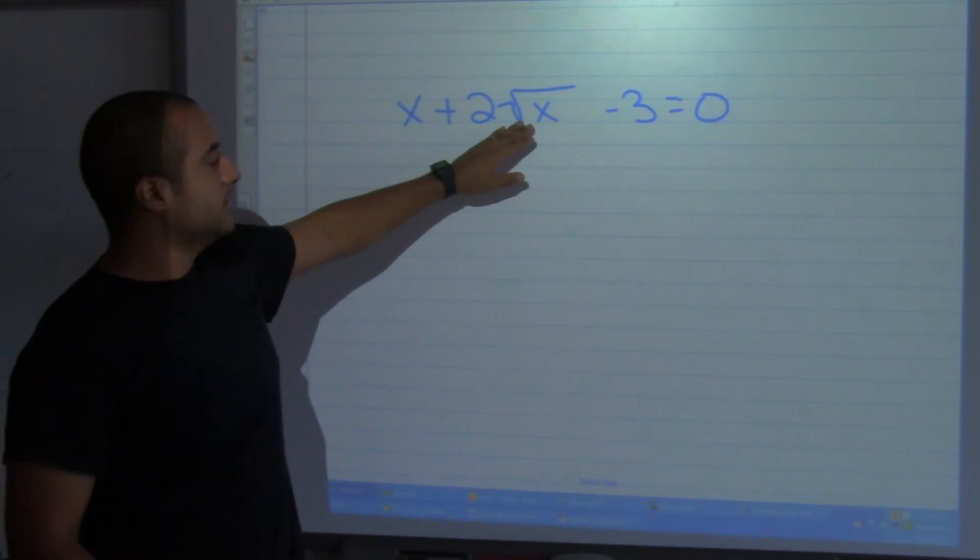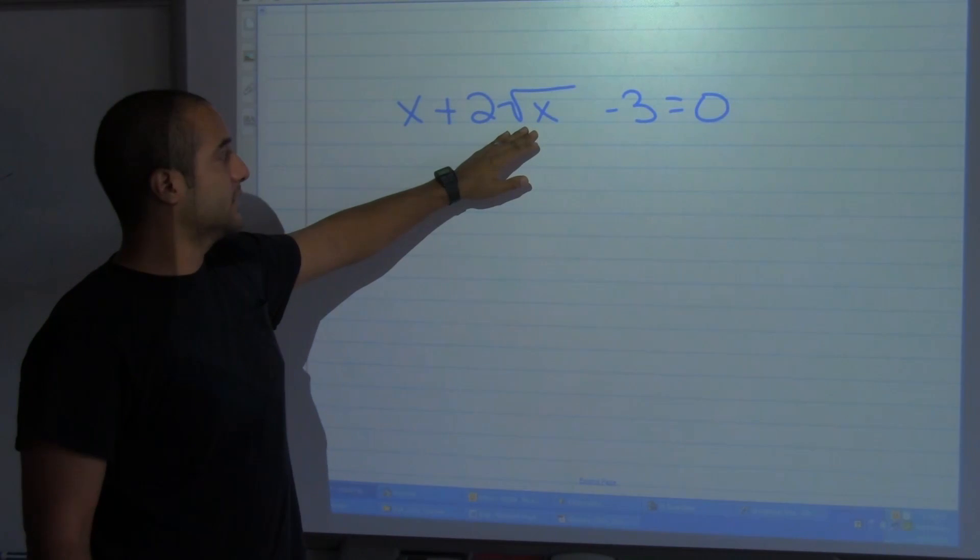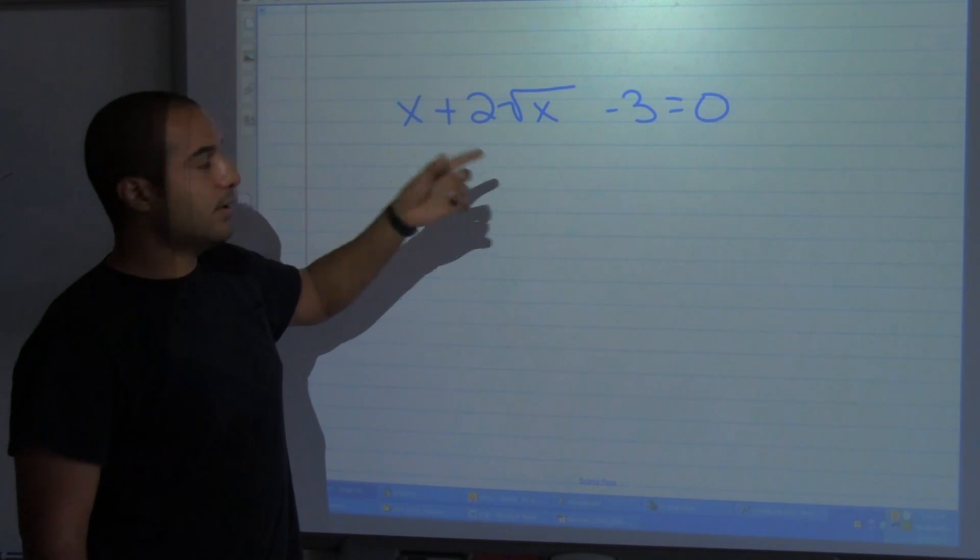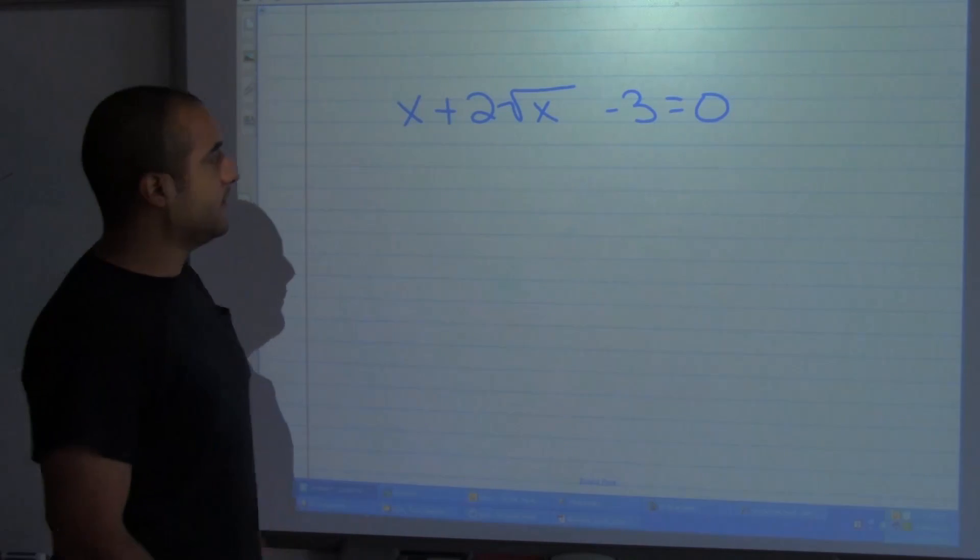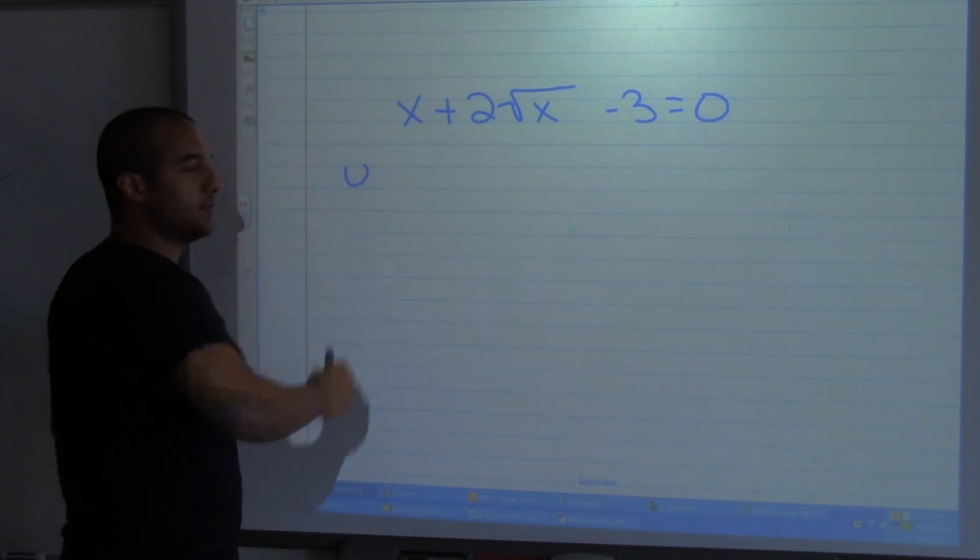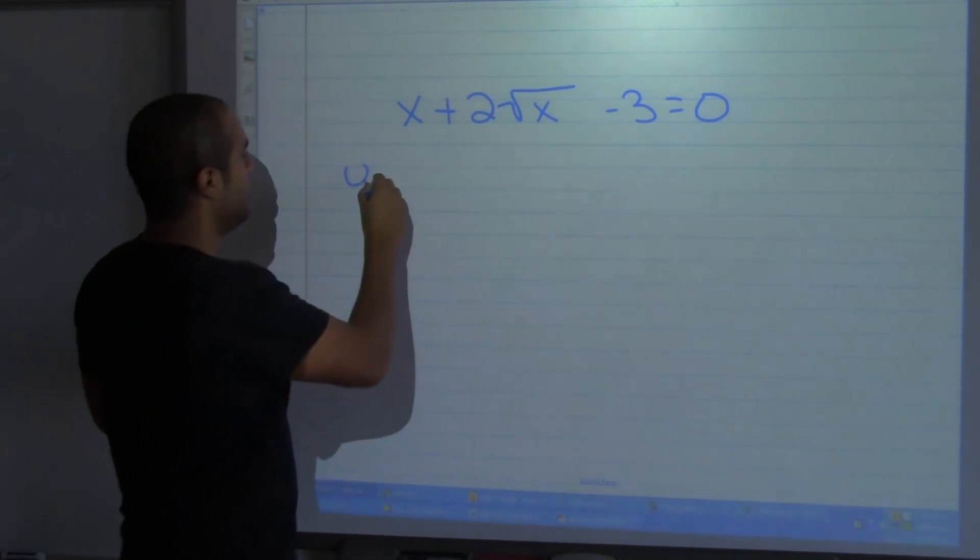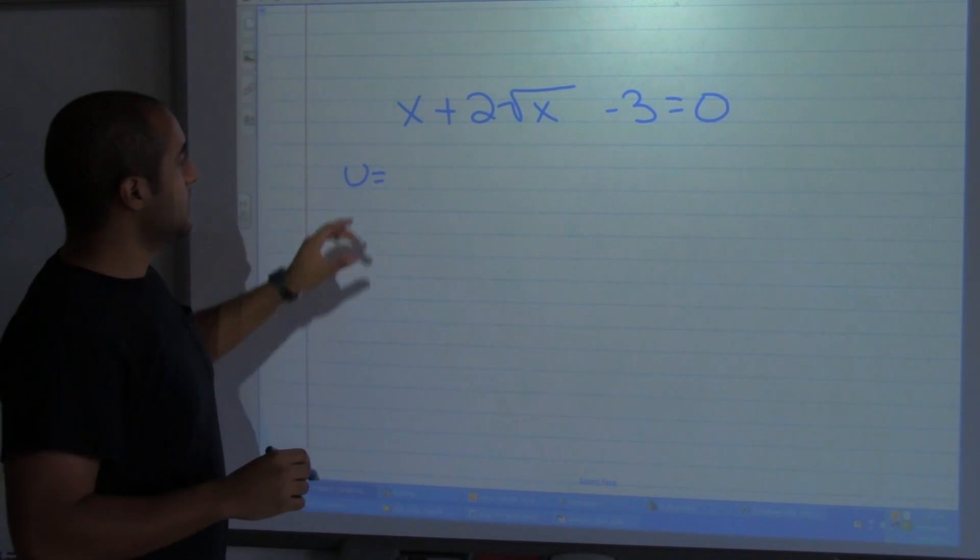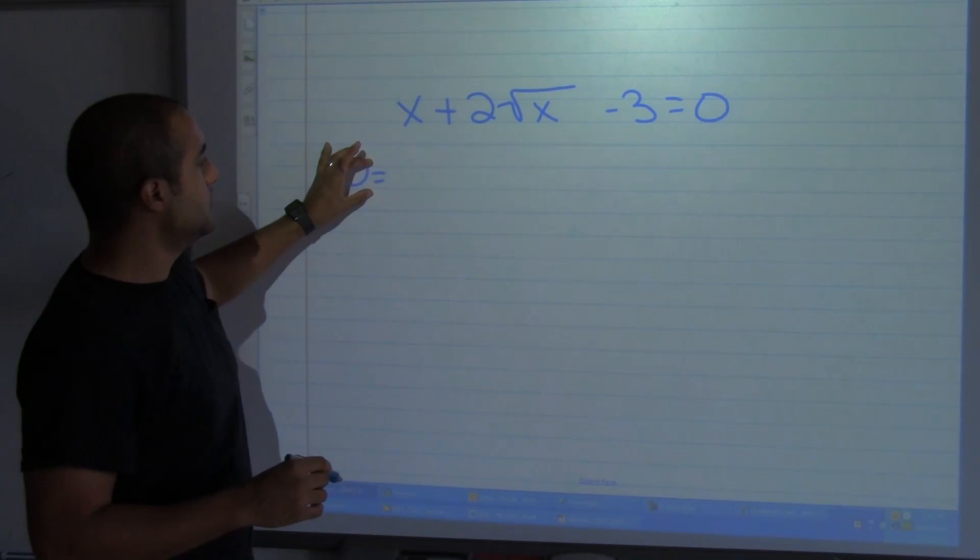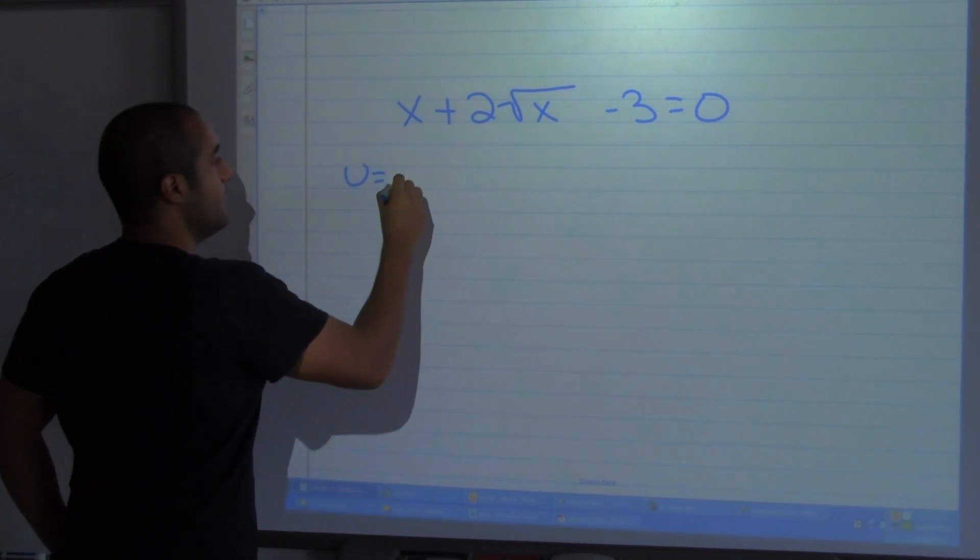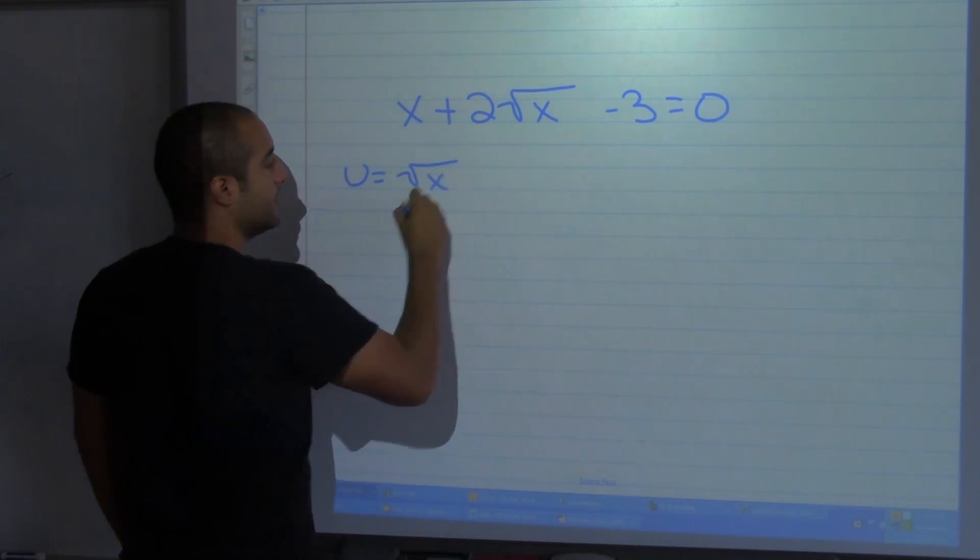Alright, last example for today. Now here, my middle term is a square root of an x. Now what I want to do here is kind of use what I did before. I want to substitute that with a u instead so I can make it look like a quadratic equation. What I'm going to do is I'm going to choose my u to be equal to the square root of x.